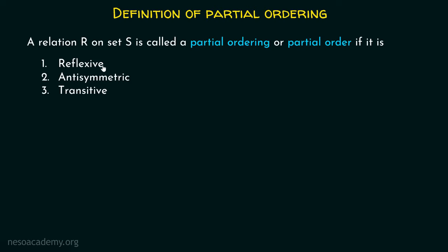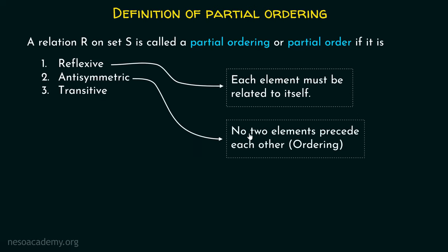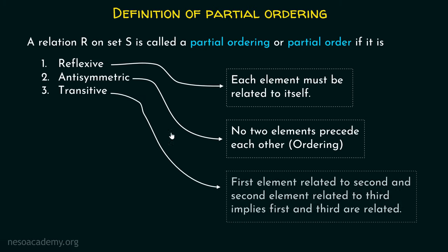Let's now understand what these properties mean to us. Reflexive means each element must be related to itself. Anti-symmetric means no two distinct elements precede each other — this property is helping us in ordering the elements and forming the sequence. Transitive means if the first element is related to the second and the second element is related to the third, then the first and third are also related.